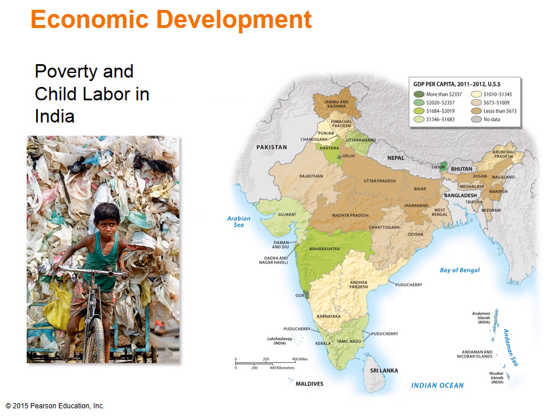There is a profound dichotomy in South Asia as it relates to economic development. It is one of the poorest regions, yet it has some of the most immense fortunes. The region has achieved many world-class scientific and technological accomplishments, but also has some of the world's highest illiteracy rates. Poverty in India is rampant, resulting in a significant amount of child labor. India shows marked differences in regional levels of economic development — its more prosperous areas are generally located in the west and south, while the north and east lag behind.